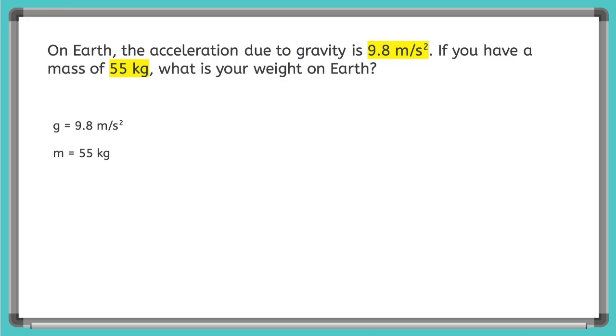So little g equals 9.8 meters per second squared on Earth, and the mass is 55 kilograms. So now to find the weight, all we have to do is multiply.